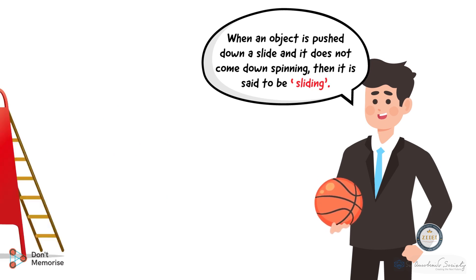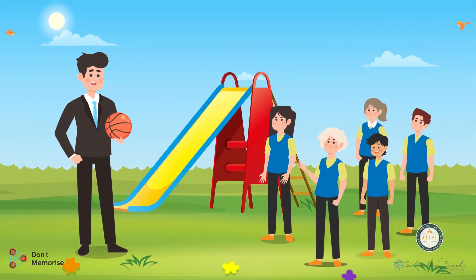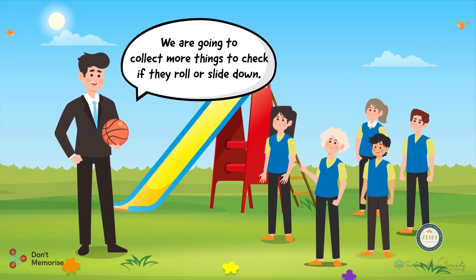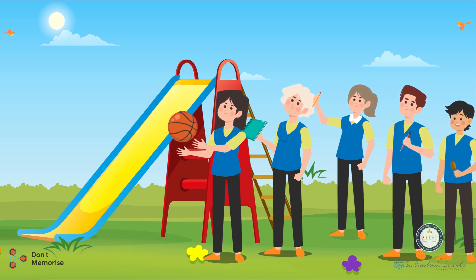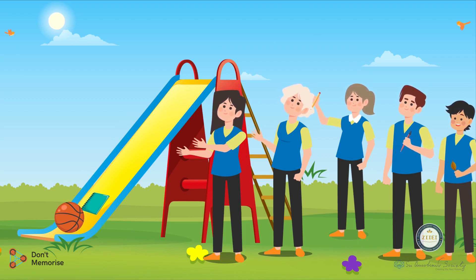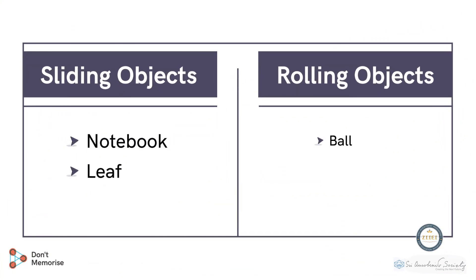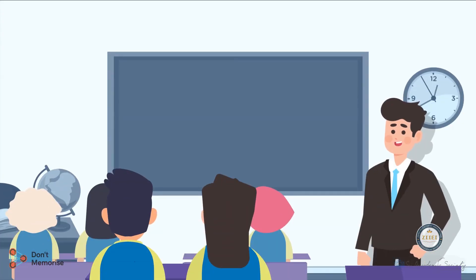Continue the discussion by telling students that when we push an object which does not spin down the slide, it is said to be sliding down — just like their friend who came sliding down the slide. Next, tell them that we are going to collect more things to check if they roll or slide down. Collect objects found around the ground with the students, then push them down the slide. Make a list classifying the objects based on whether they slide or roll, asking students for their inputs.